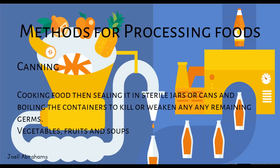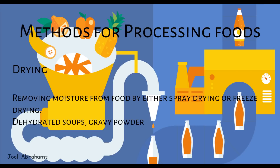Canning — cooking food, then sealing it in sterile jars or cans, and boiling the containers to kill or weaken any remaining germs. Examples include vegetables, fruits and soups. Drying — removing moisture from food by either spray drying or freeze drying. Examples include dehydrated soups and gravy powder.